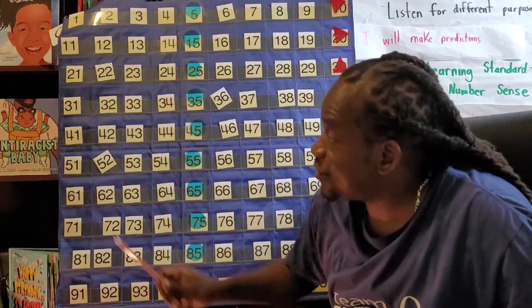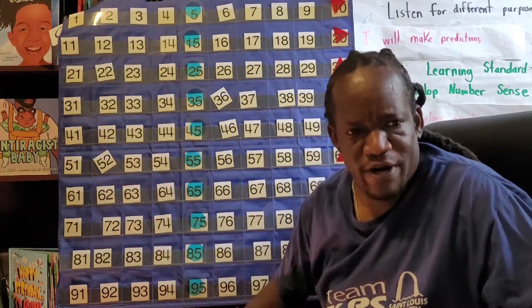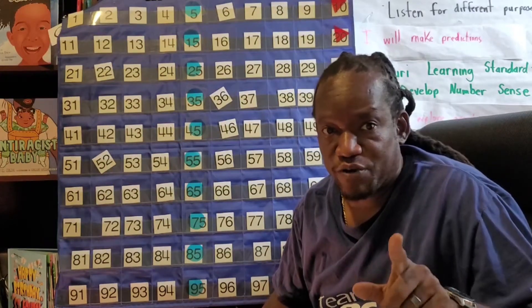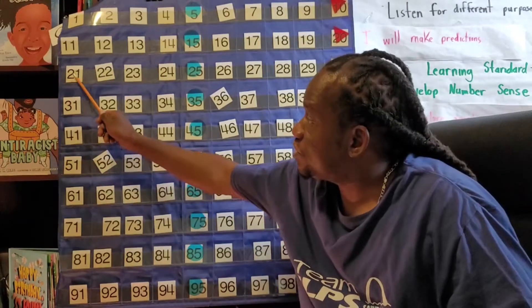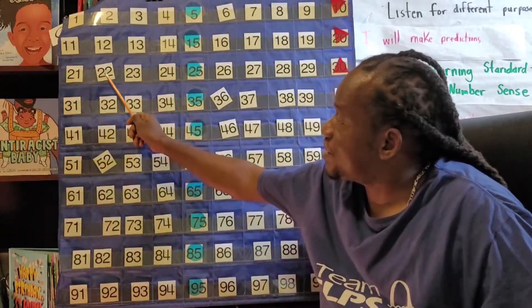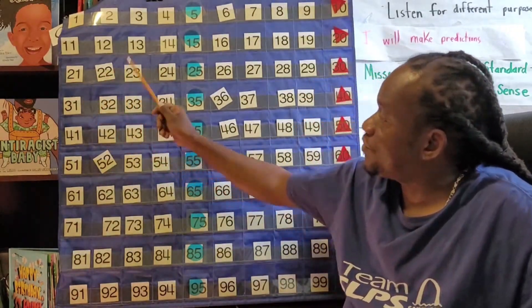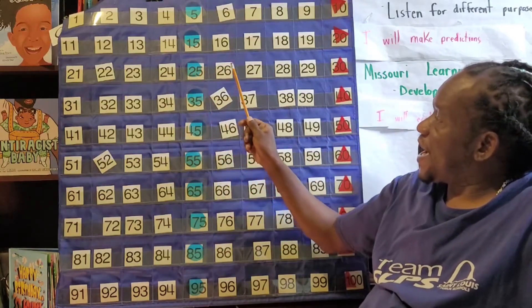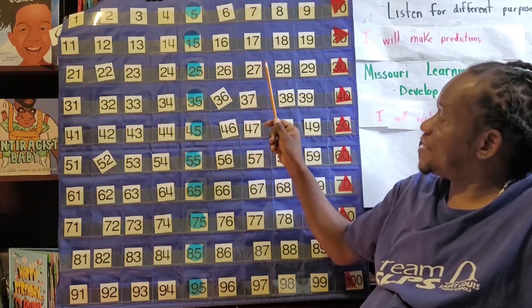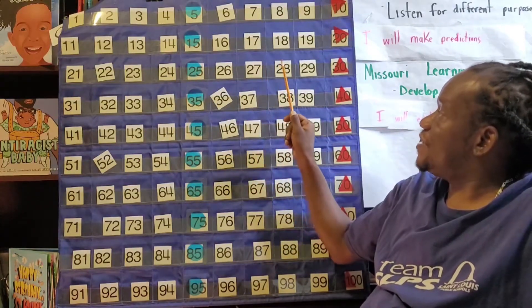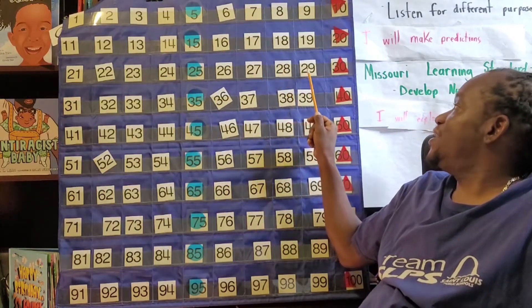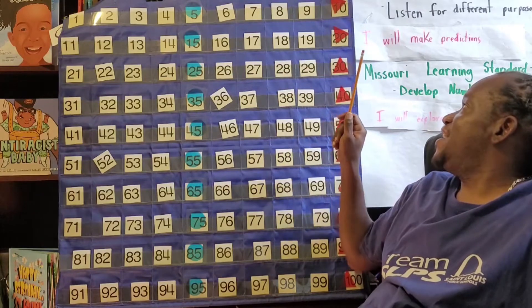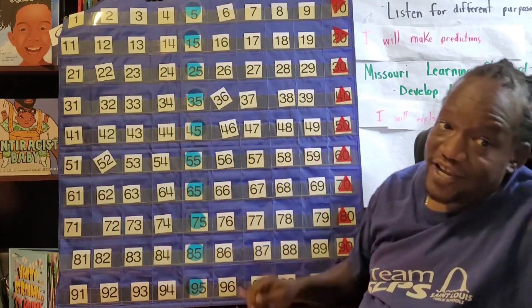All right, let's go to thirty. You ready? Can you count to thirty? Twenty-one is next. Twenty-one, twenty-two, twenty-three, twenty-four, twenty-five, twenty-six, twenty-seven, twenty-eight, twenty-nine, thirty. You all are getting very good at counting. Remember, we're going to stay together. We all stay together and we count together.